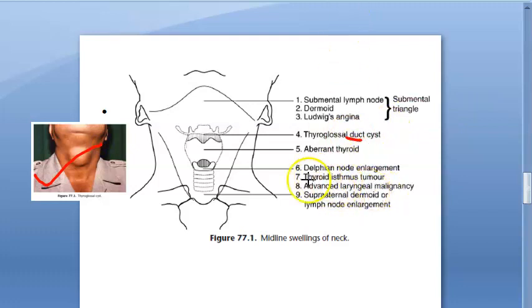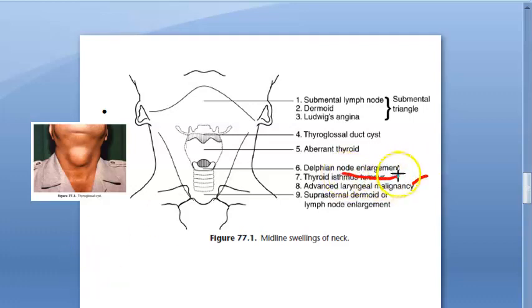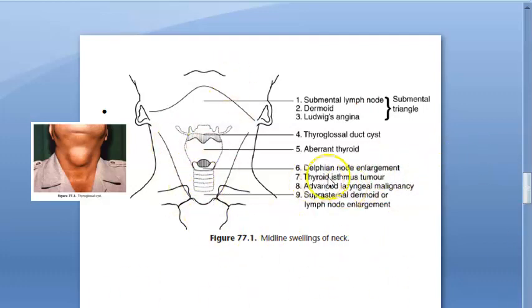It could also be a tumor of the thyroid isthmus, advanced laryngeal cancer, or malignancy. There is also Delphian node enlargement, suprasternal dermoid, or lymph node enlargement depending on the position. It can also be an aberrant thyroid, which is essentially a goiter — an enlarged thyroid.